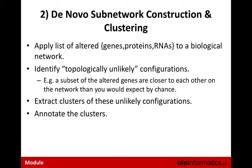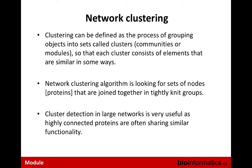De novo sub-network construction is the approach that the Reactome FI takes. You take your list of genes, proteins, or RNAs and apply that to a larger biological network. You identify topologically unlikely configurations — subsets of altered genes that are more closely connected in the network than you would expect by chance. You can extract these clusters and annotate them with gene ontology or pathway annotations. Network clustering is this approach where you're trying to group objects together — call them sets, clusters, communities, or modules — where each cluster consists of elements that have something in common. There are a variety of different network clustering algorithms.